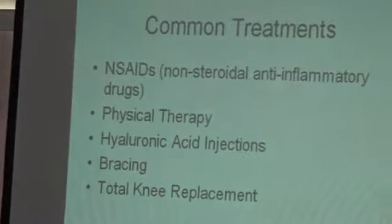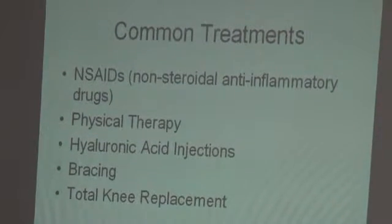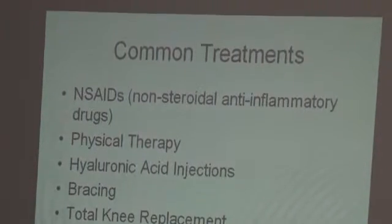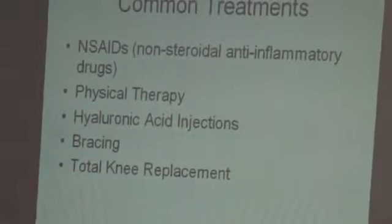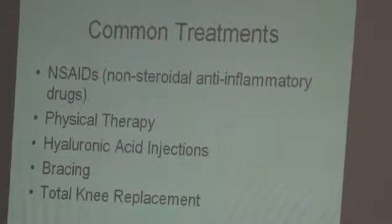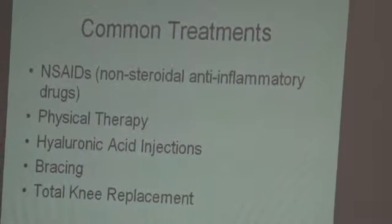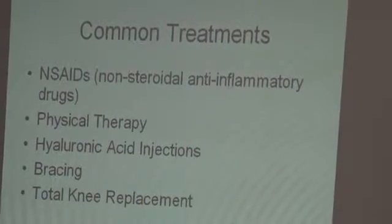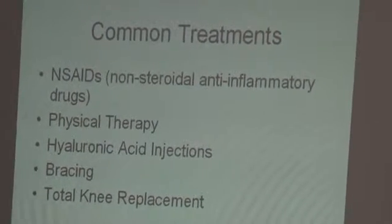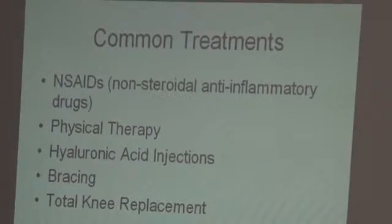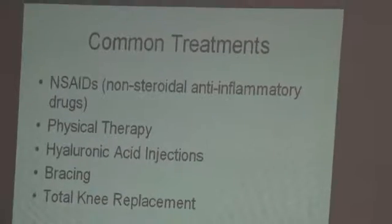Common treatments for osteoarthritis include: number one, NSAIDs - non-steroidal anti-inflammatory drugs; number two, physical therapy; number three, hyaluronic acid injections; number four, bracing; and number five, total knee or hip replacement. These are the most common ways we as a nation treat osteoarthritis, and we're going to get into those in some detail now.